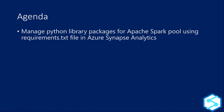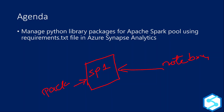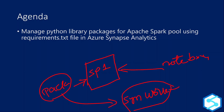In our previous videos, we discussed that inside the Synapse workspace you have an Apache Spark Pool. We create notebooks that run on top of this Spark Pool. If you created some package and want to install it onto the Spark Pool, what we did in our past video is upload the package into the Synapse workspace and attach it with the Spark cluster. Thereby, whenever any session starts, that particular package gets installed.